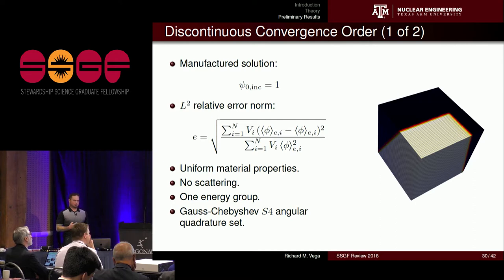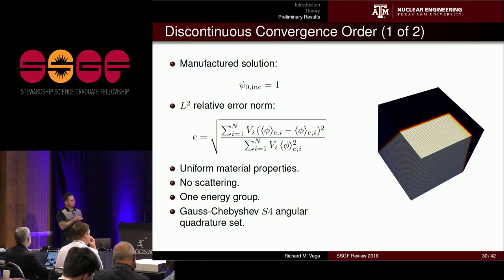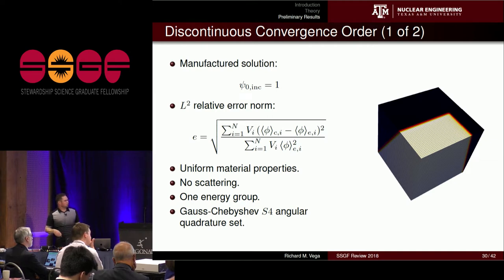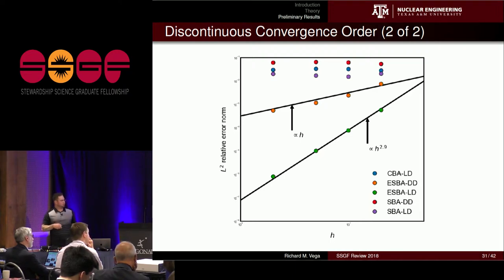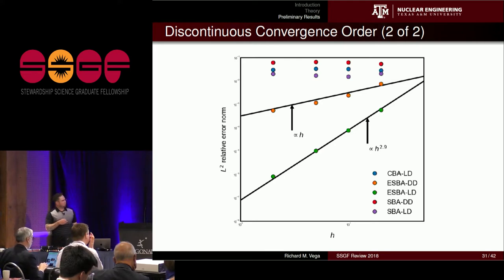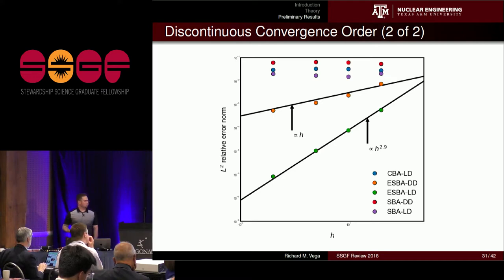We also looked at discontinuous convergence order, since this method should excel with shadow-type discontinuities — for example, a source on the bottom face streaming to the top of the mesh in a narrow ray. Using the same L2 relative error norm with uniform material properties, no scattering, single energy group, and Gauss-Chebyshev angular quadrature, the extended SBA for both diamond difference and linear discontinuous finite elements retains its convergence order, with one result at 2.9. Some cases converge slowly and we're also exploring a point-wise L2 norm to further characterize the convergence.